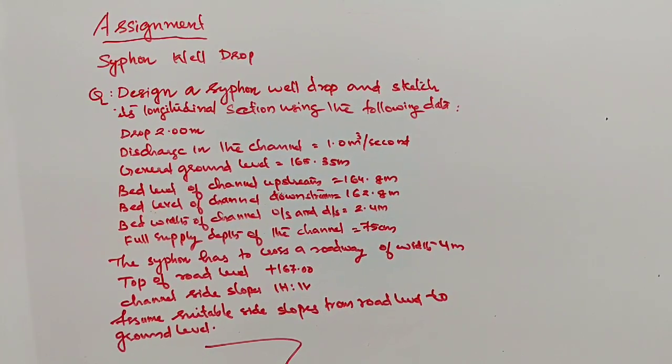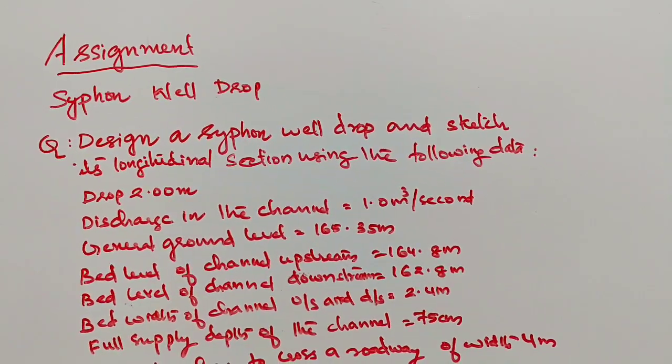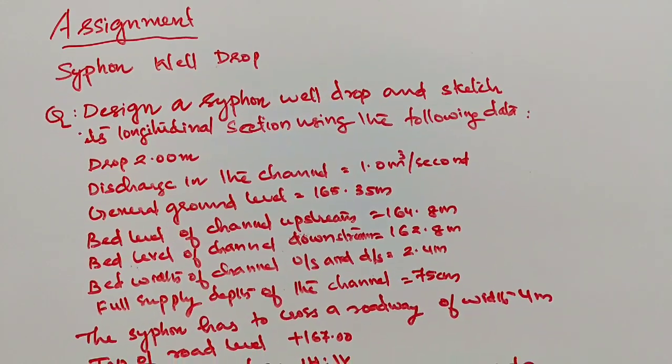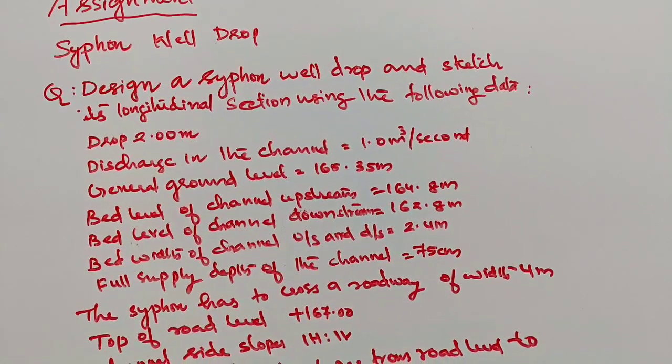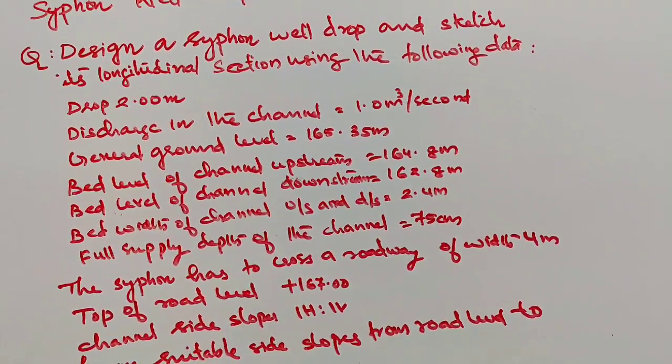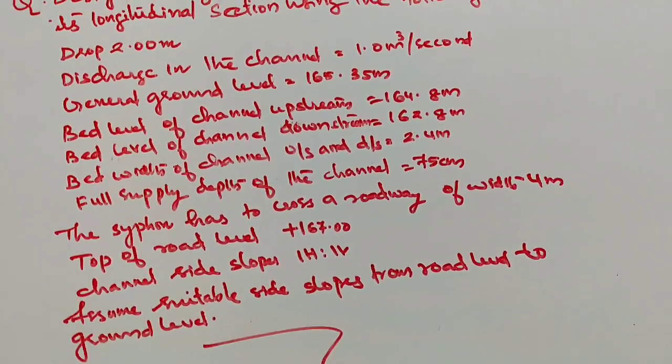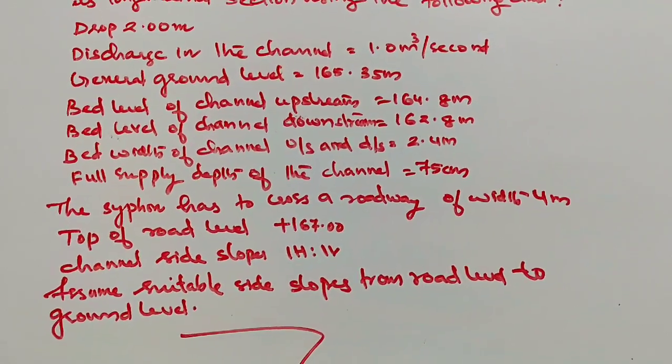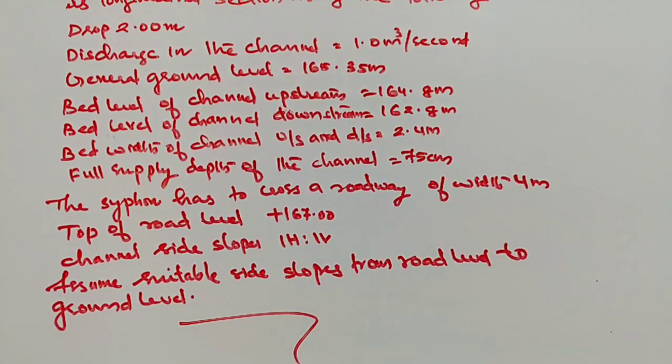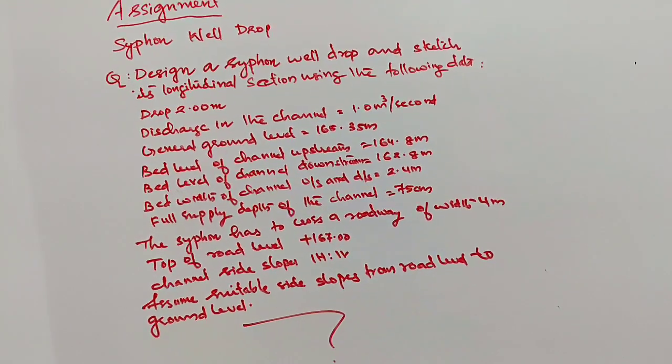Assignment question for you all: design a siphon well drop and sketch the longitudinal section. Details: upstream channel, downstream channel, bed level, bed width, full supply level, full supply depth. Siphon crosses road, width, top level of the road, side slopes. Any integral data missing, assume that data. Detailed design after that, detailed drawing, longitudinal section.